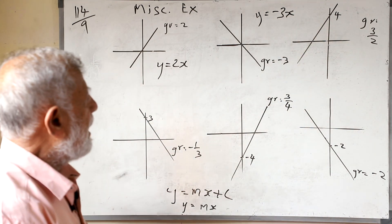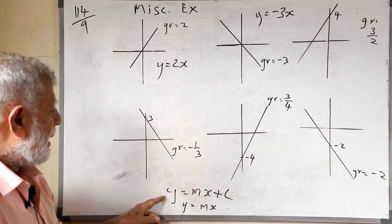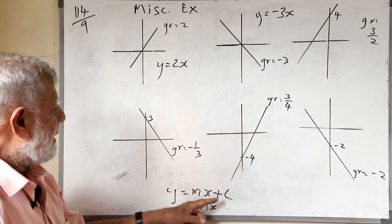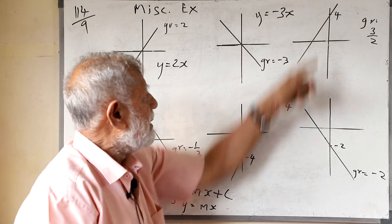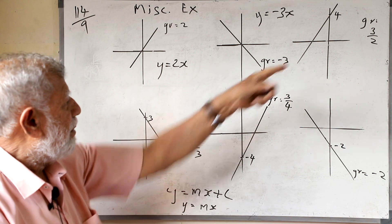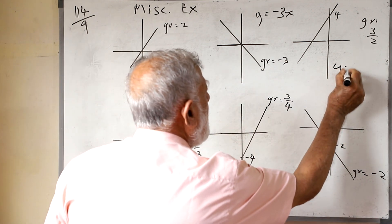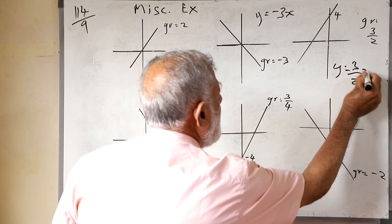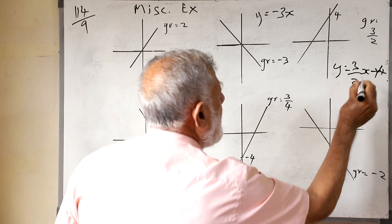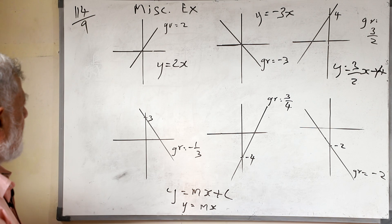This one — the line is going through 4 on the y-axis. So we use the formula y = mx + c. Here c is the place where it cuts the y-axis, so c = 4. The gradient given is 3/2, so we can write the equation as y = (3/2)x + 4.